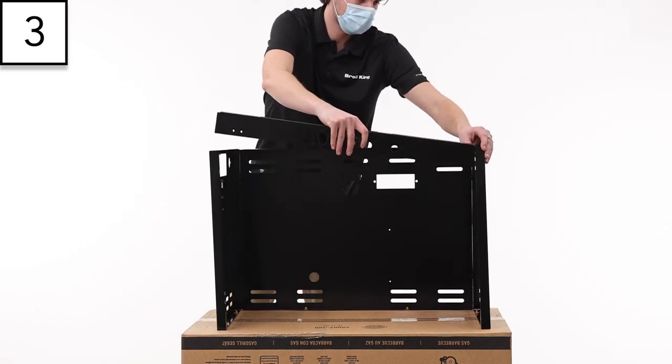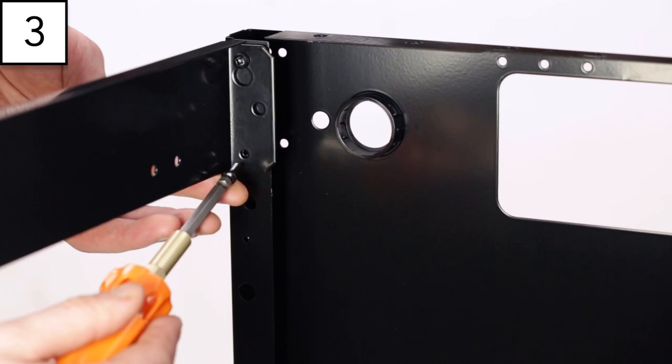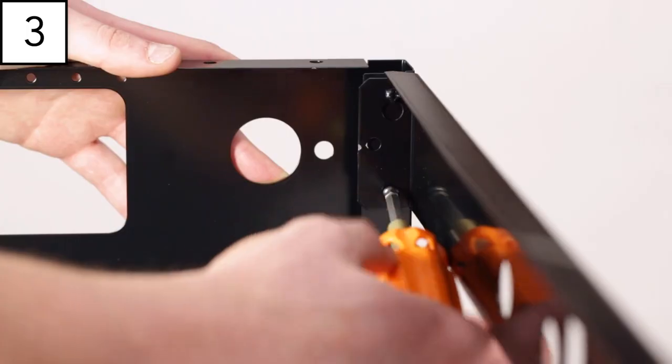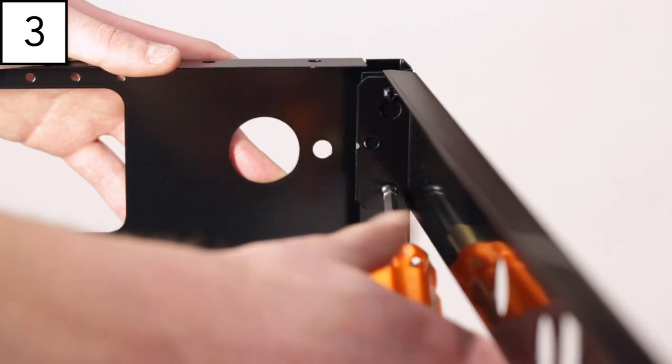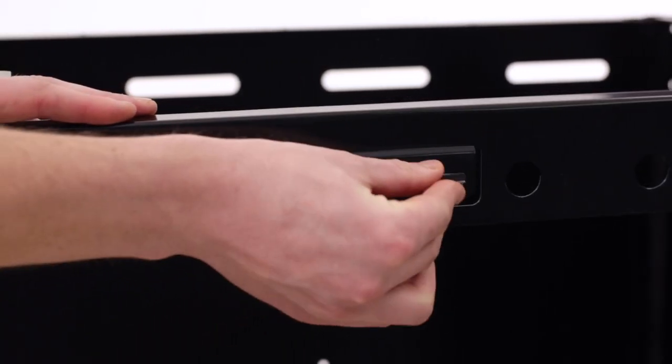To install the door catch bracket, use the pre-installed screws to attach the bracket and install the two other screws to secure it. Install the magnets into the door catch bracket by snapping them in place.